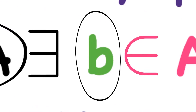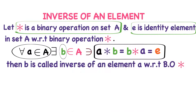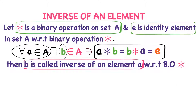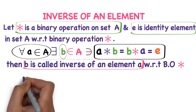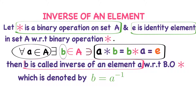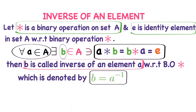To find the inverse of element A, there exists element B in set A such that A star B equals B star A equals E, where E is the identity element. If this condition is satisfied, then B is called the inverse of element A. B is the inverse of A, so it is denoted as B equals A inverse.